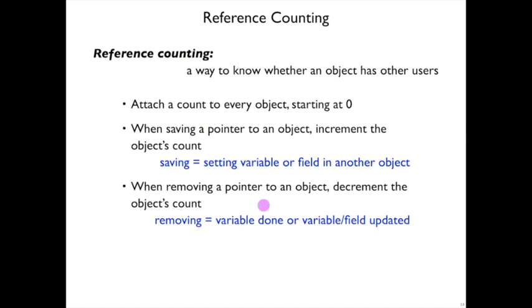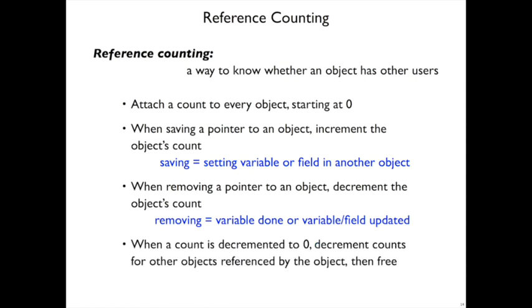On the other hand, whenever you stop referring to an object, when the pointer is in a variable but the variable is changed, or the pointer is in a field and that field is changed, in those cases we're going to decrement the reference count.